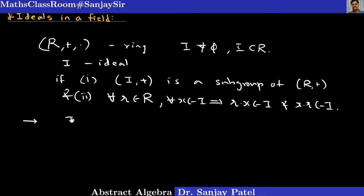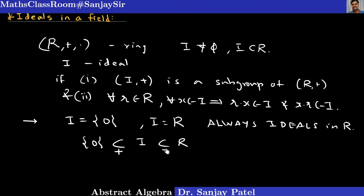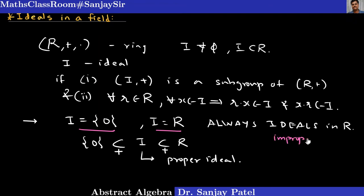We know that in any ring, the set equal to singleton {0} and R equal to the whole ring R are always ideals of ring R. Any other ideal other than {0} and R is called a proper ideal — that is, if {0} ⊂ I ⊂ R with I ≠ {0} and I ≠ R, then I is called a proper ideal. The two ideals I = {0} and I = R are known as improper ideals.